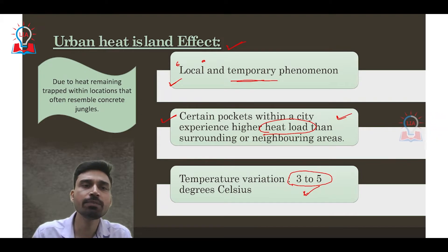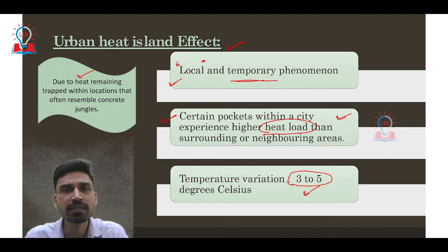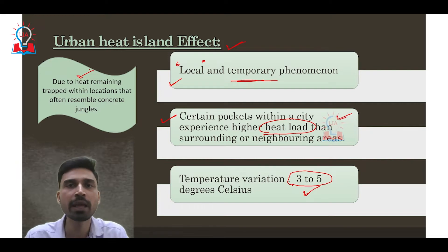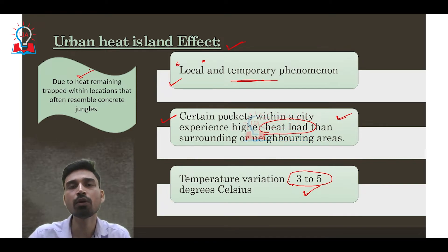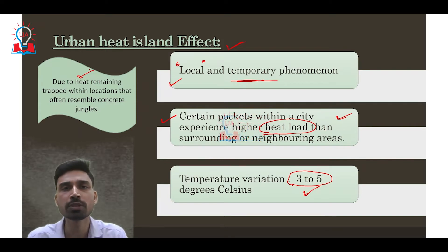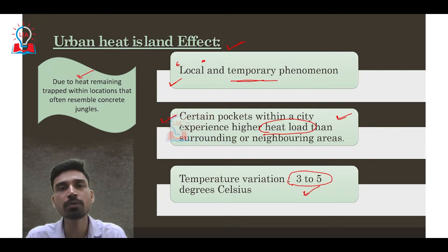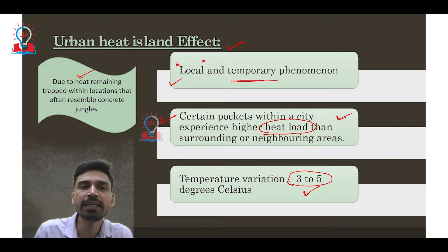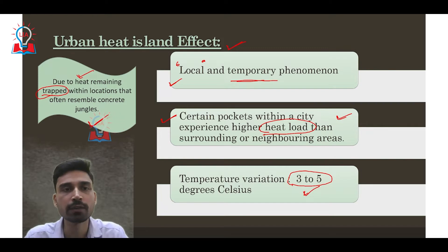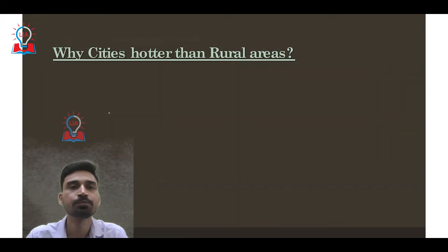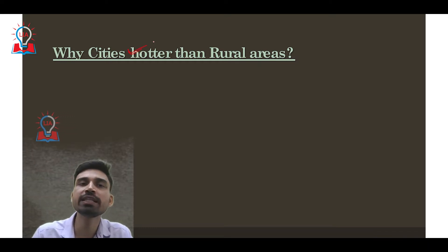The heat island phenomenon occurs especially in pockets of cities where urban development is most intense — where we have a large number of vehicles, large-scale concrete buildings, and a high density of roads covered by coal tar asphalt. All of these absorb heat to a very high degree, causing heat to become trapped within these locations. These regions resemble concrete jungles, and that is why we call it the urban heat island effect.